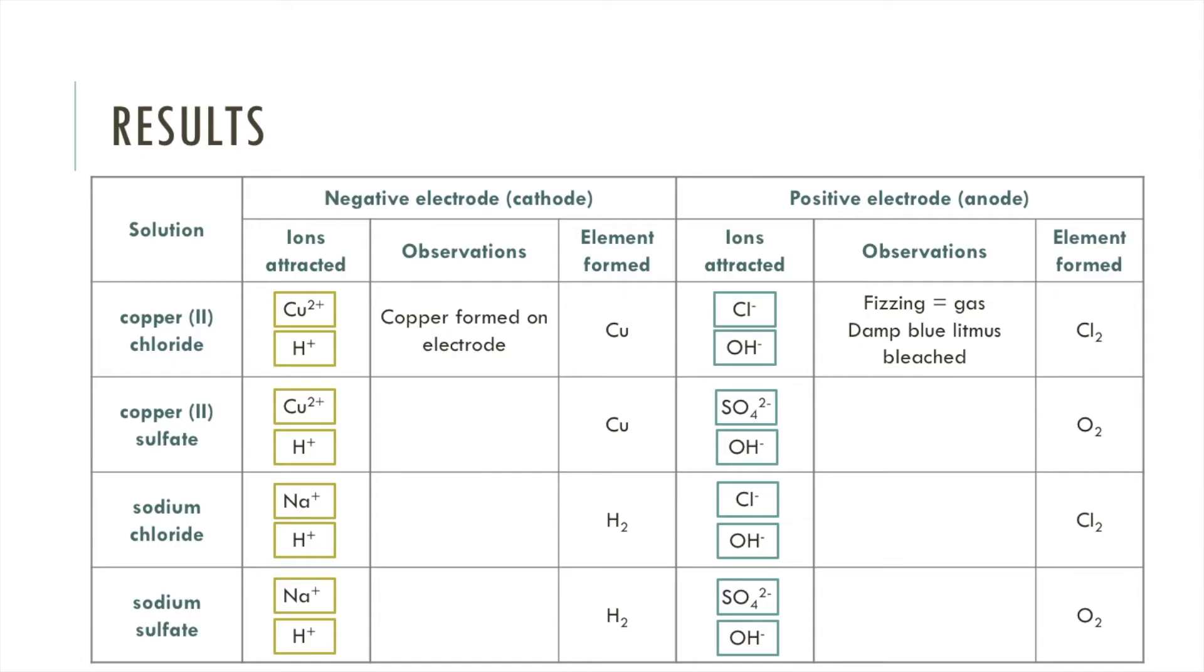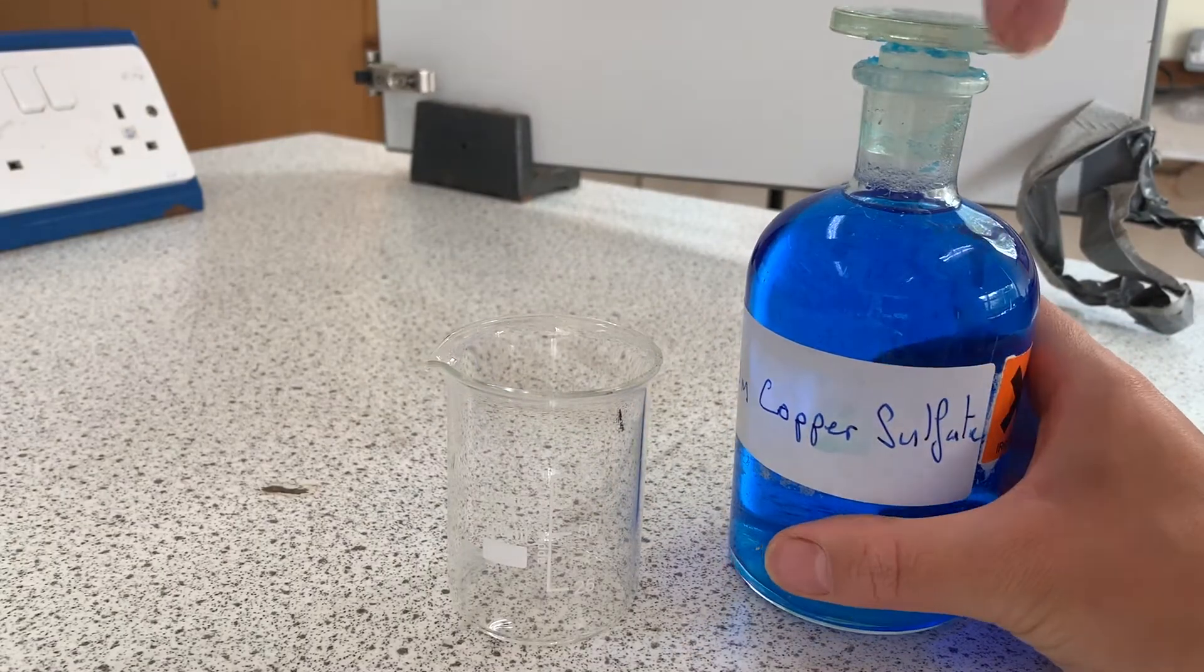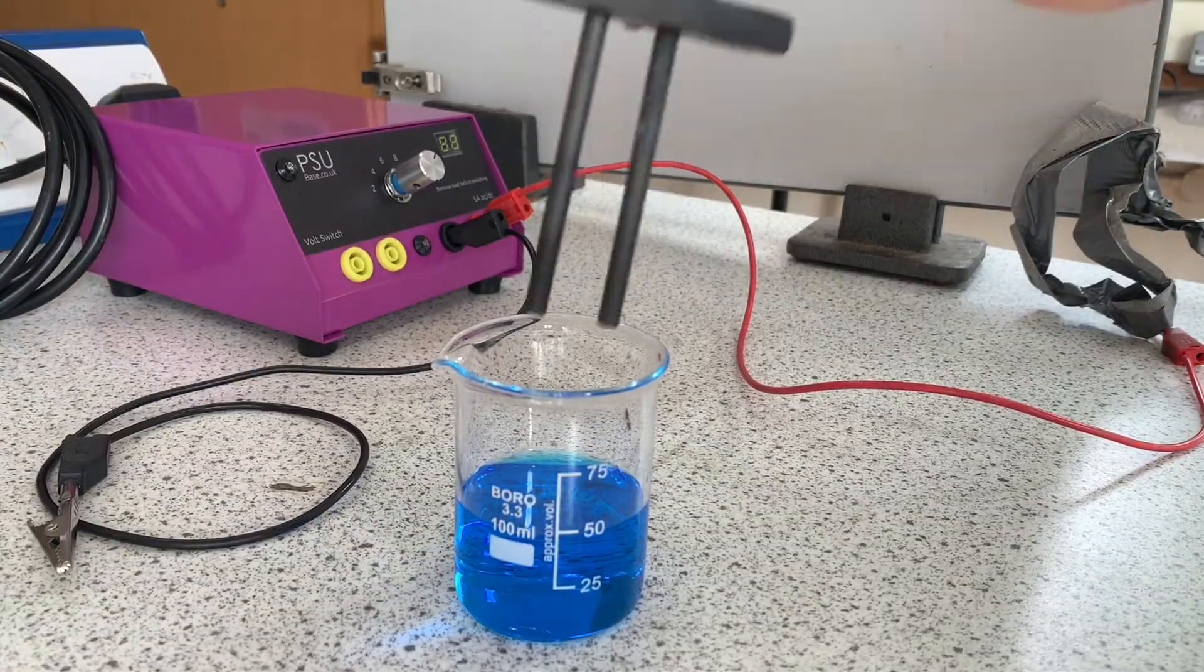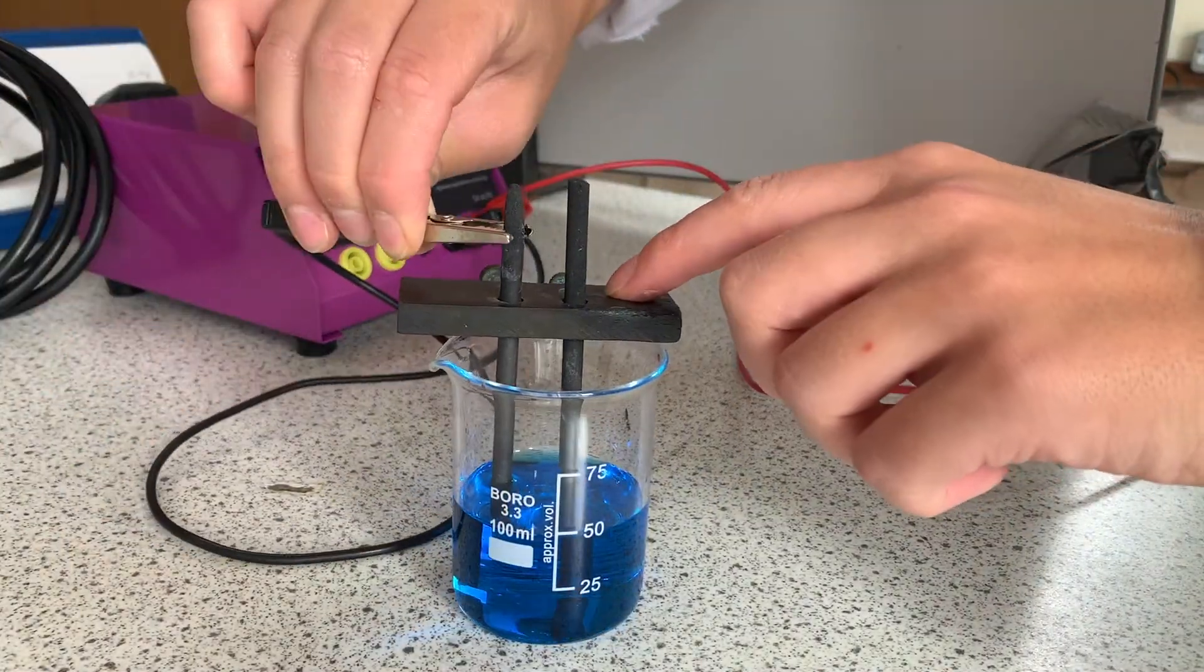Now I'm going to repeat the same procedure for copper sulphate. So you pour copper sulphate into a beaker, place in the electrodes making sure they're not touching, and connect your power source.